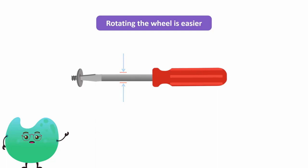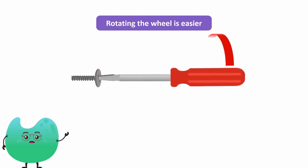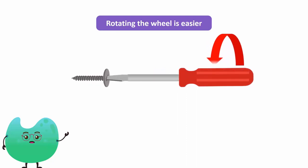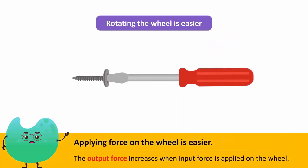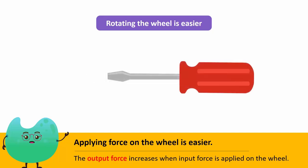Moreover, it is easier to open a screw using a screwdriver with a handle of a greater diameter. So, when we want to apply less force, we apply the force on the wheel rather than the axle. We can also use a wheel of a greater diameter according to the requirement of the task.